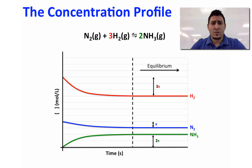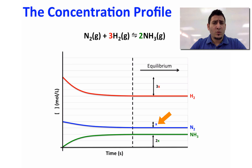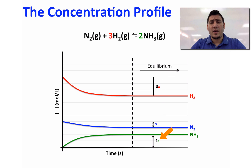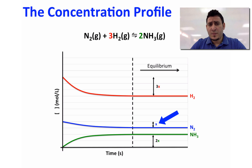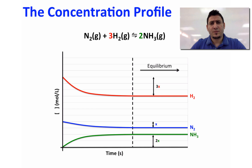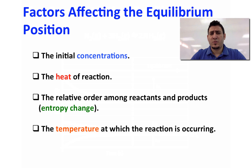You have to make sure that you are respecting the stoichiometry of the reaction, because for every one mole of N₂ consumed, three moles of H₂ are consumed and two moles of NH₃ are produced. This change has to be reflected in your concentration profile, as shown by the arrows where x corresponds to N₂, 2x to NH₃, and 3x to H₂. This way you have a perfect concentration profile.